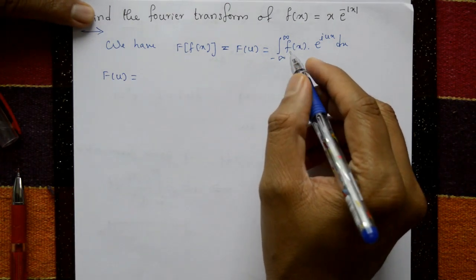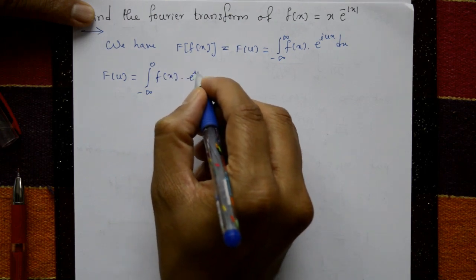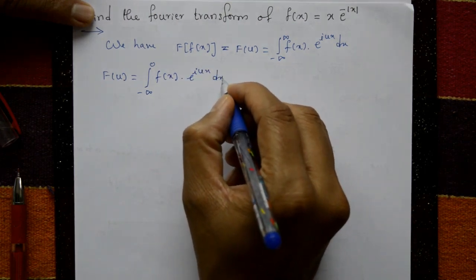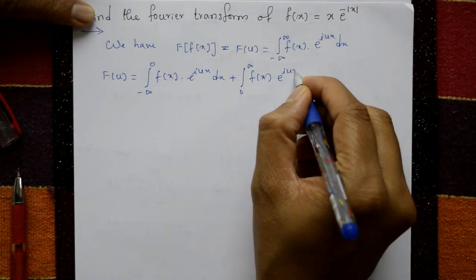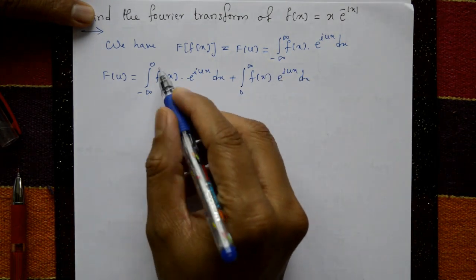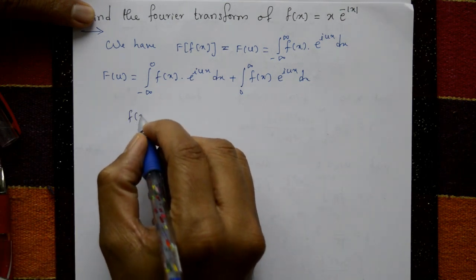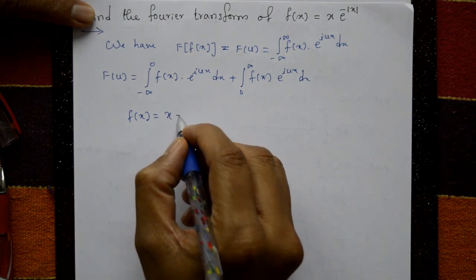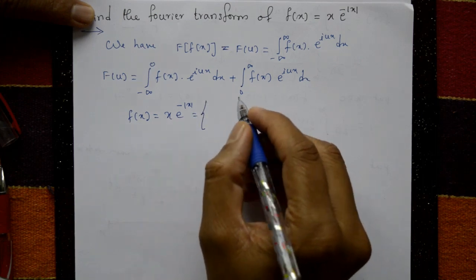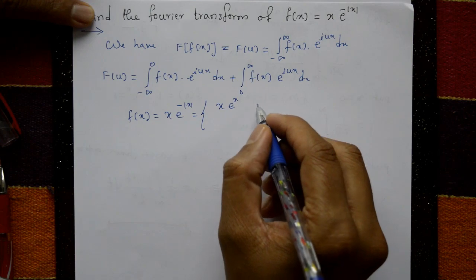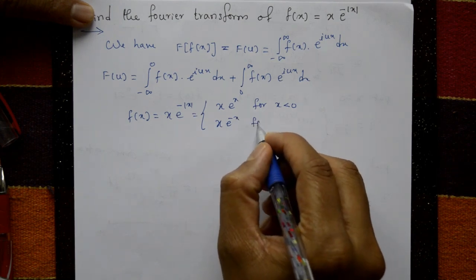F(u) equals the integration from minus infinity to 0 of f(x)·e^(iux) dx, plus the integration from 0 to infinity of f(x)·e^(iux) dx. Now f(x) = x·e^(-|x|), which equals x·e^x for x less than 0, and x·e^(-x) for x greater than 0.